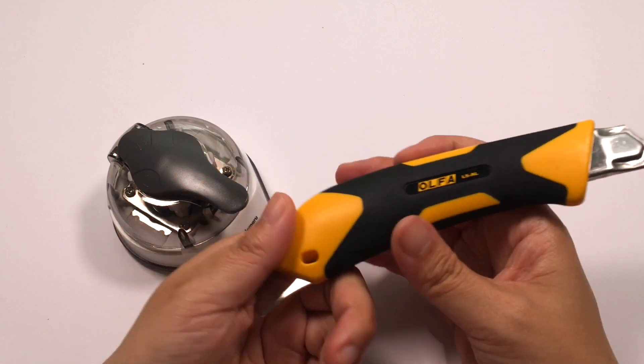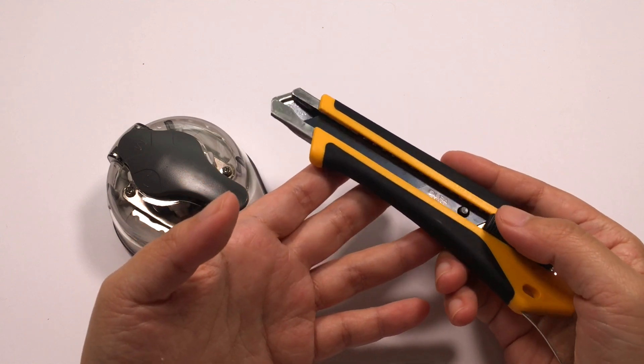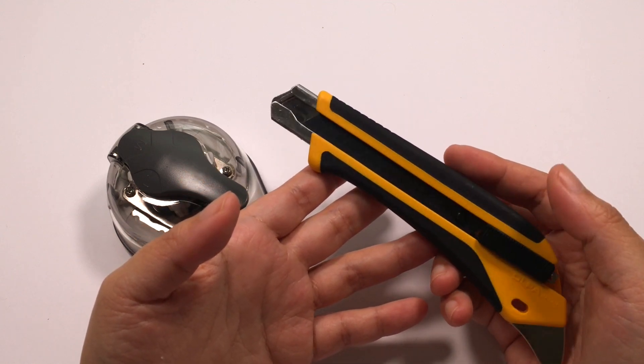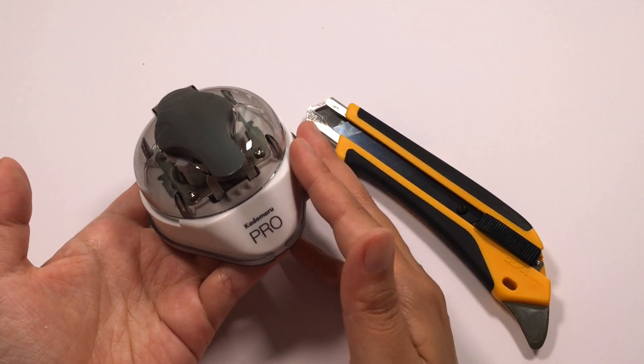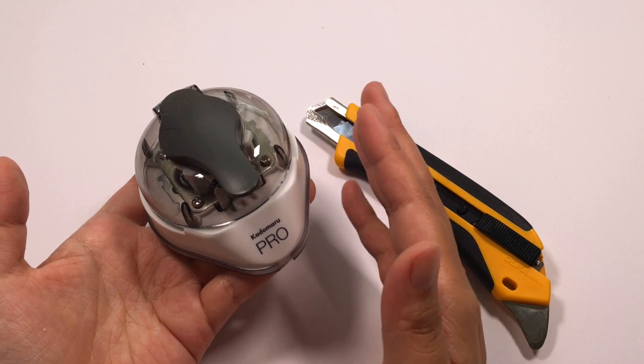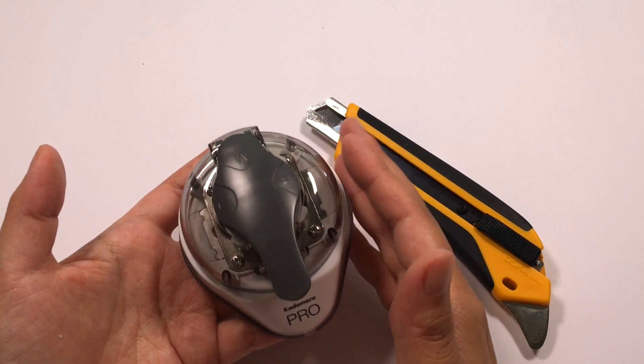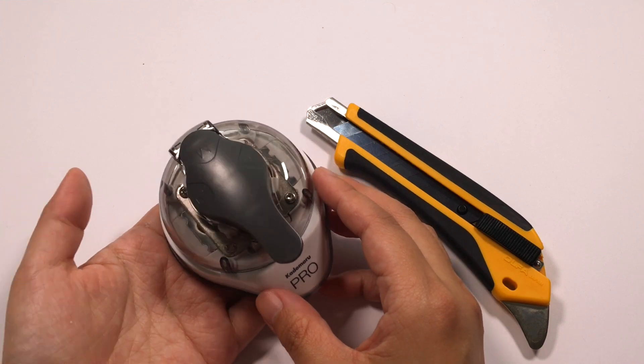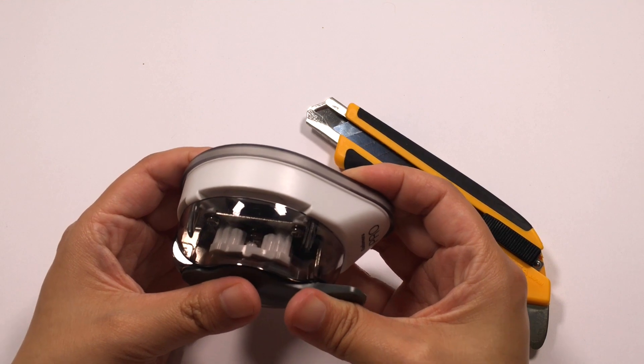It's sharp enough that it doubles up as a scalpel as well and it can give you that fine detail that you normally have to go for a scalpel for. My other favorite cutting tool is the Kadamaru Pro, and if you've seen my swatch cards and things you'll notice that I always round the corners off and this is what I use to do that.